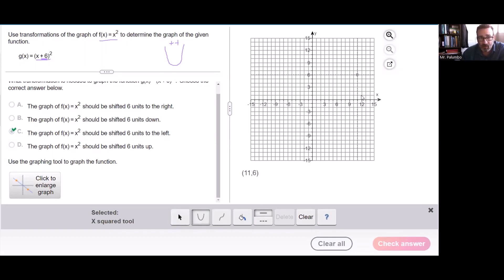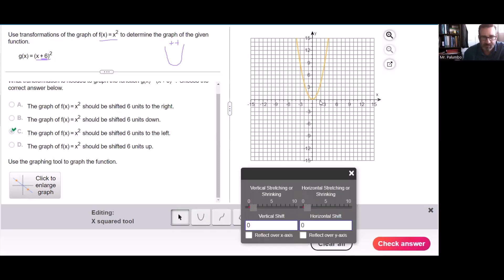And it doesn't matter where on this graph you click. It's going to give you your basic parabola at (0, 0) at the origin. That's where your vertex is going to be. So I'll click up here top left just to show you it doesn't matter where I click. Here's my parabola.